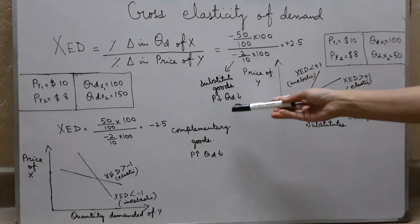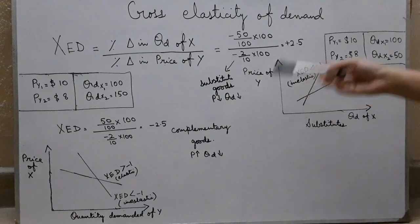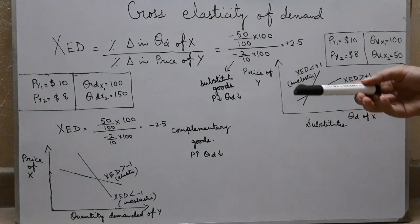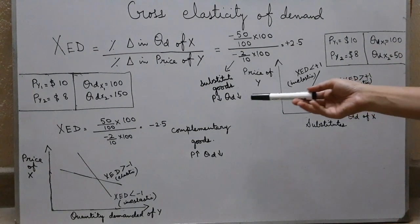On the other hand, if the price of Pepsi goes up, the quantity demanded of Coca-Cola would increase. People who were consuming Pepsi earlier would switch to the consumption of Coca-Cola.